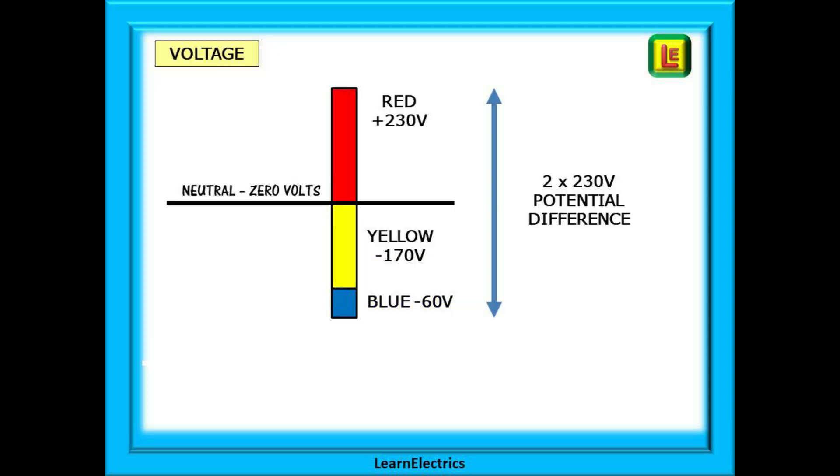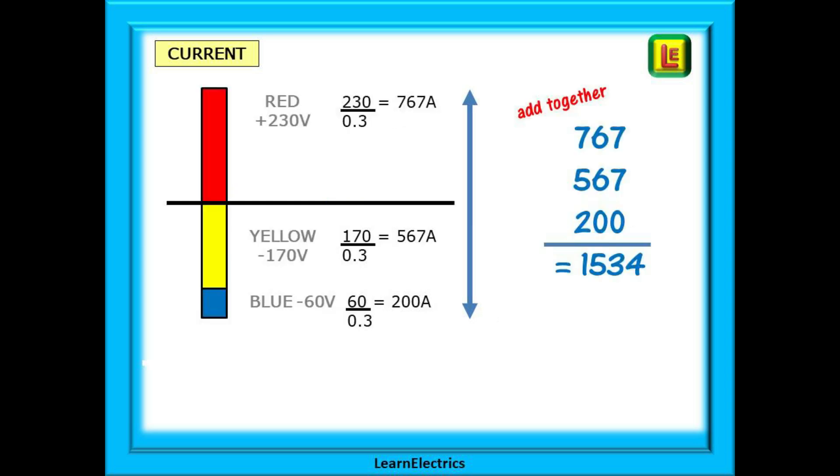This time we are not going to cancel things out. We're going to stack them up one after the other. We have red at plus 230 above neutral, yellow is at 170 below neutral, and then blue at minus 60. How far apart are the top and bottom of the column? One half is at 230 positive and the other half is 230 negative. Now calculate the currents using the same 0.3 ohms as before. 230 divided by 0.3 is 767 amps flowing in the positive direction. 170 divided by 0.3 is 567 amps in the negative direction. And lastly, 60 divided by 0.3 is 200 amps also in the negative. How much current is flowing?